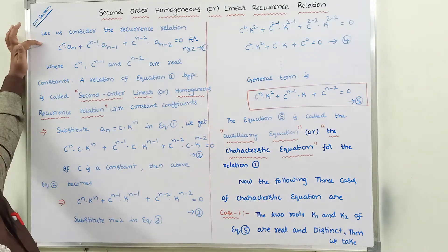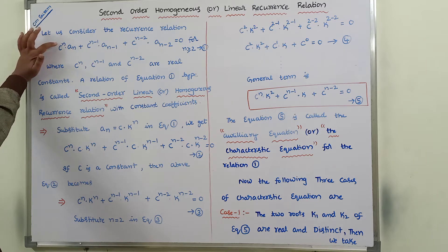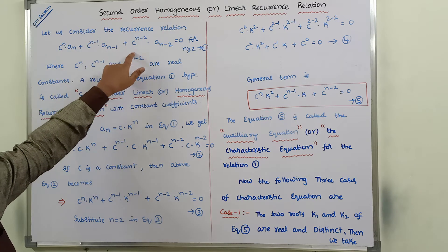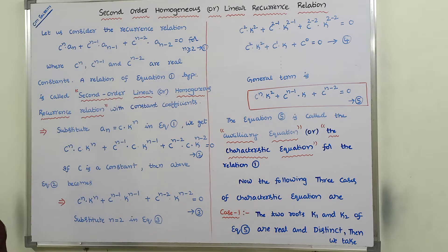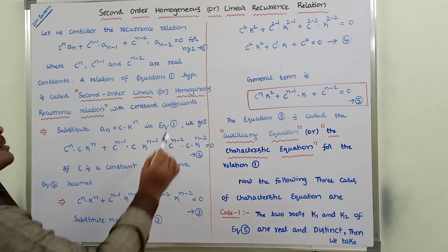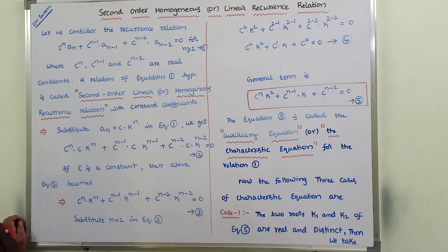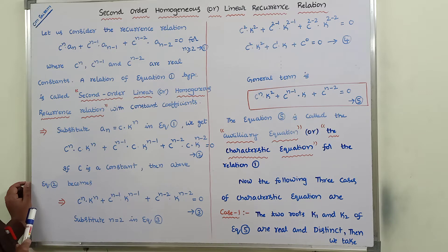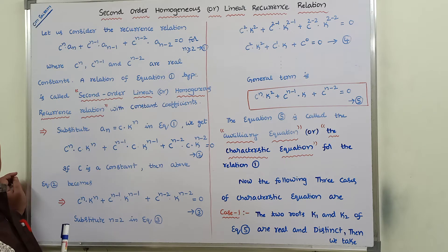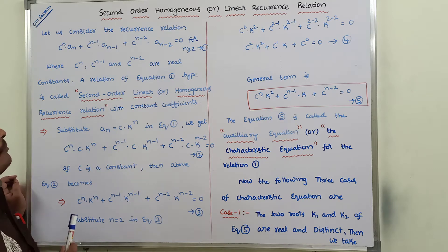Let us consider the recurrence relation: c_n times a_n plus c_(n-1) times a_(n-1) plus c_(n-2) times a_(n-2) equals 0, for n greater than or equal to 2. This is equation 1. This is the second order linear recurrence relation, of degree 2. The right-hand side is equal to 0, hence it is a linear homogeneous recurrence relation of second order.